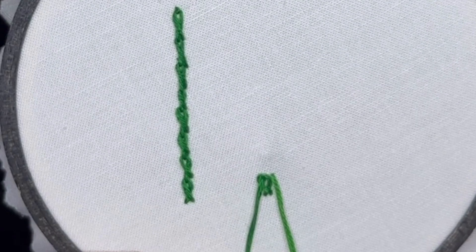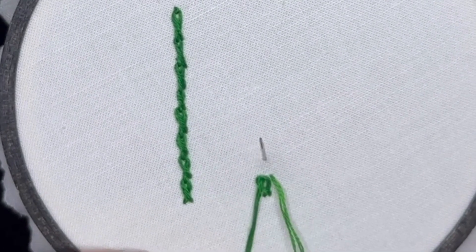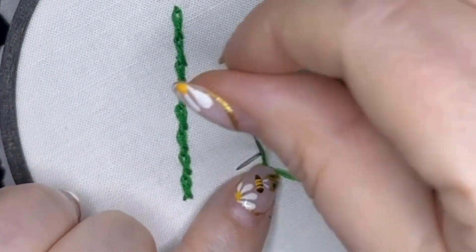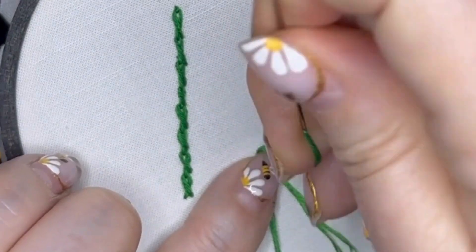Make your loop, bring your needle up through the fabric, take your thread around the needle from right to left, and pull gently through.